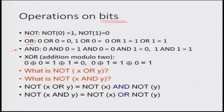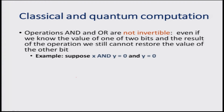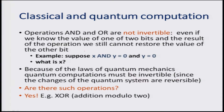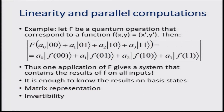However, with quantum mechanics as we have discussed, those non-reversible gates will not be possible. The operations AND and OR are not invertible — even if we know the value of one of the two bits and the result of the operation, we still cannot restore the value of the other bit. For example, if we have X AND Y and Y is equal to 0, what is X? Because of the laws of quantum mechanics, quantum computations are required to be invertible, which means the classical basis of gates for computation has to be reversible. The XOR gate — addition modulo 2 — is 100% reversible.